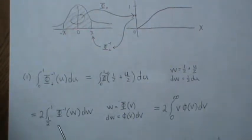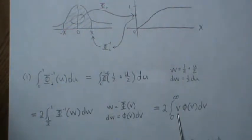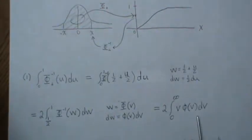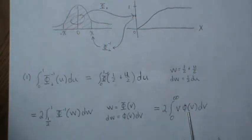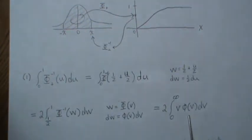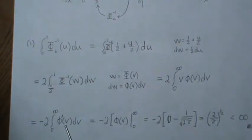Plugging in, the inverse of the CDF of the CDF is just the argument, so we get v back. And dw is phi(v) dv. Now one of the interesting properties of the standard normal distribution is that v times phi(v) equals minus the derivative of phi — I have a separate video for that, but we won't cover it here. So this piece here is minus the derivative of phi.